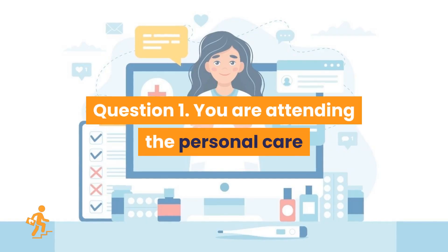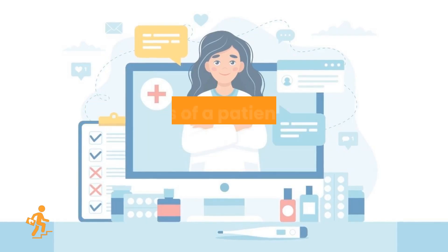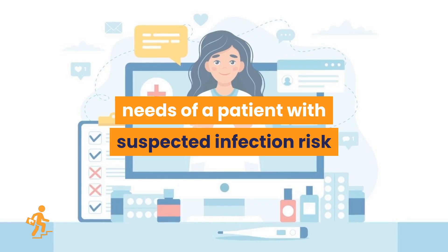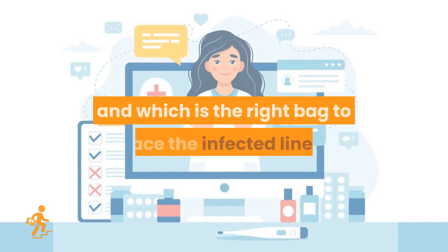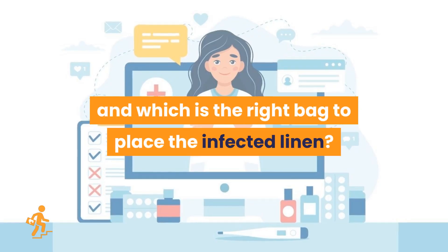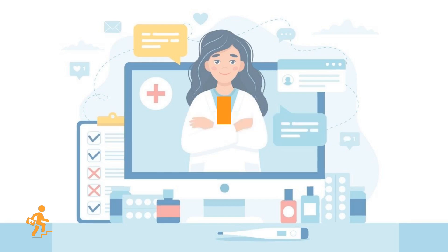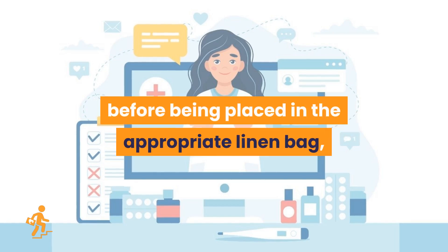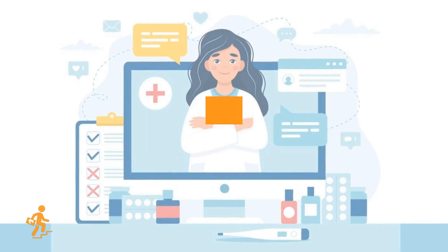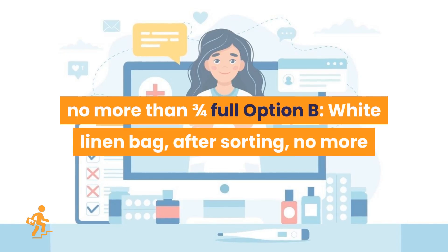Question 1. You are attending the personal care needs of a patient with suspected infection risk, and which is the right bag to place the infected linen? Option A: Orange waste bag, before being placed in the appropriate linen bag, no more than 3/4ths full. Option B: White linen bag, after sorting, no more than 3/4ths full.